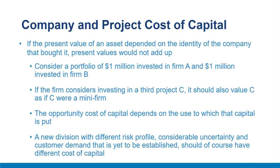Consider a portfolio of $1 million invested in firm A and $1 million invested in firm B. No reasonable investor would say this portfolio is worth anything other than $2 million. If the firm considers investing in a third project C, it should value C as if C were a mini-firm — discounting C's cash flows at the expected rate of return that investors would demand if they could make a separate investment in C. The opportunity cost of capital depends on the use to which capital is put. Estimating the cost of capital for a new project or business is challenging.